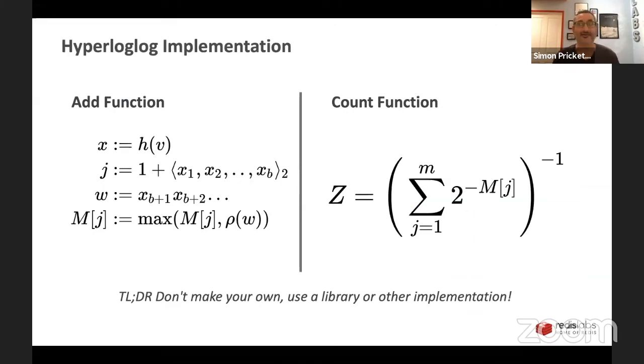I don't recommend that you make your own. This is just some math that I don't understand that I pulled off of Wikipedia that basically approximates how to make an add and a count function that's efficient storage wise and gives you an approximation of how many things it's seen. So the long and the short answer is don't make your own, use a library or get some product that uses, that has this built in if you want to use this.